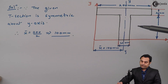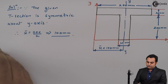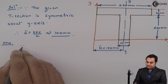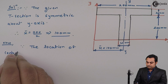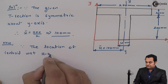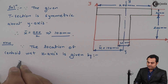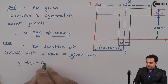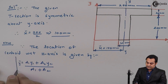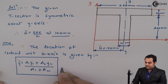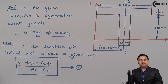The centroid lies on the y-axis, but we need to find its height. The location of the centroid with respect to the x-axis is given by y-bar = (A1·y1 + A2·y2) / (A1 + A2). We'll call this equation number one. The T-section is divided into two rectangles.